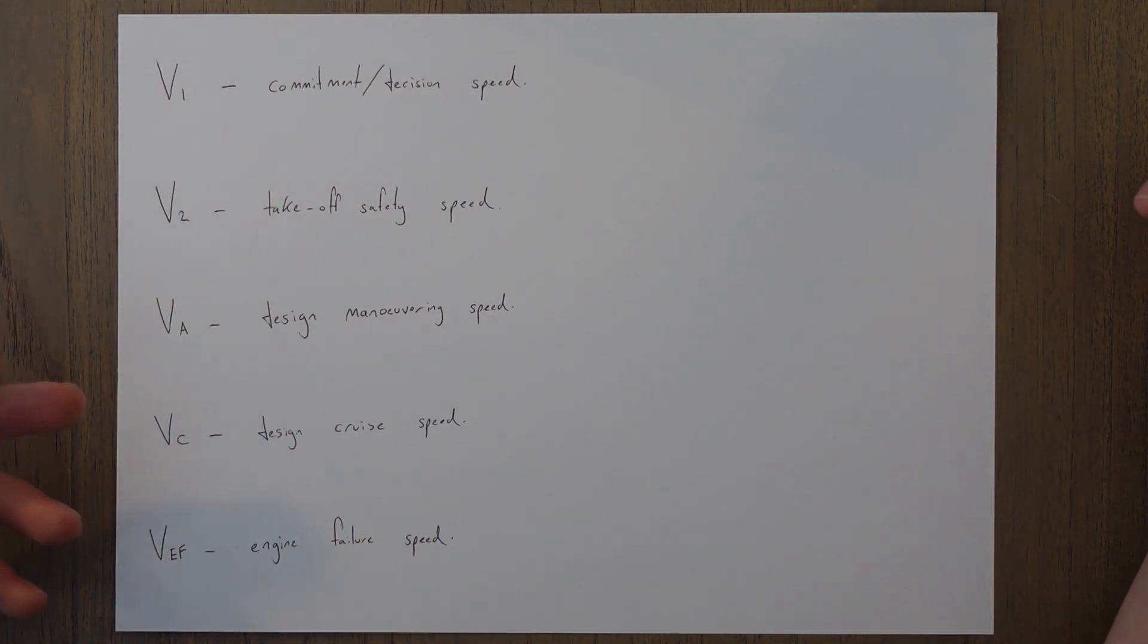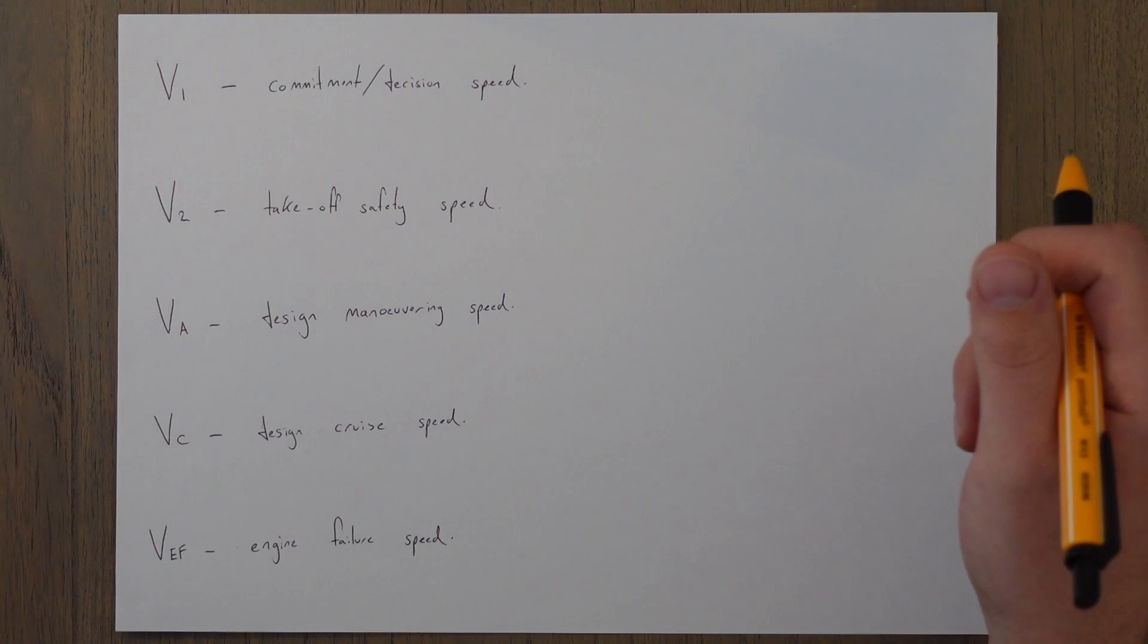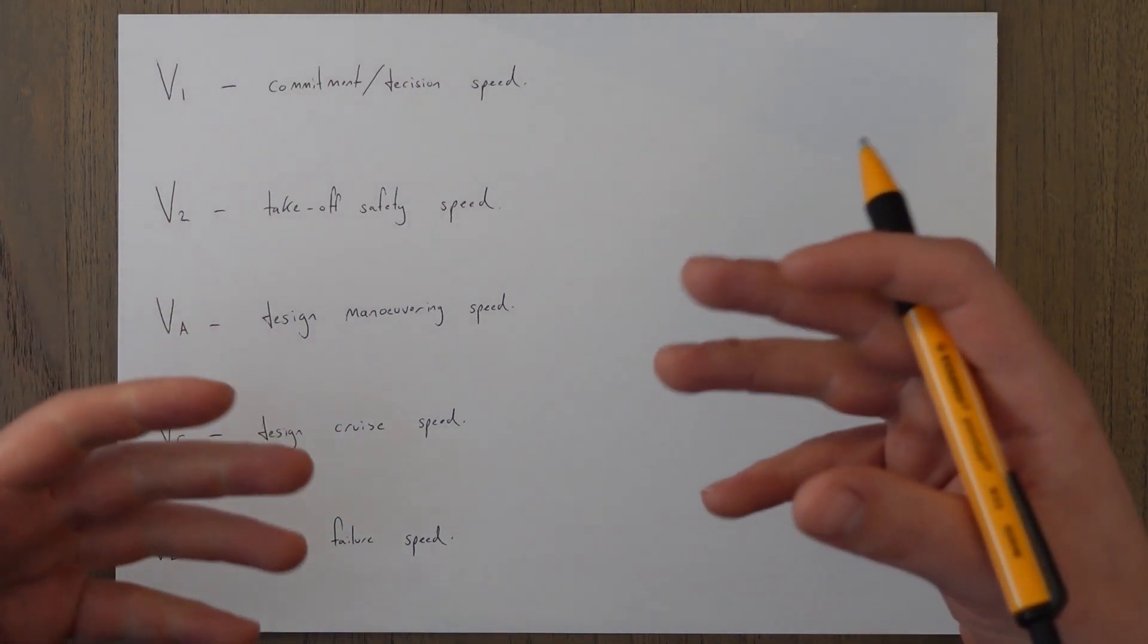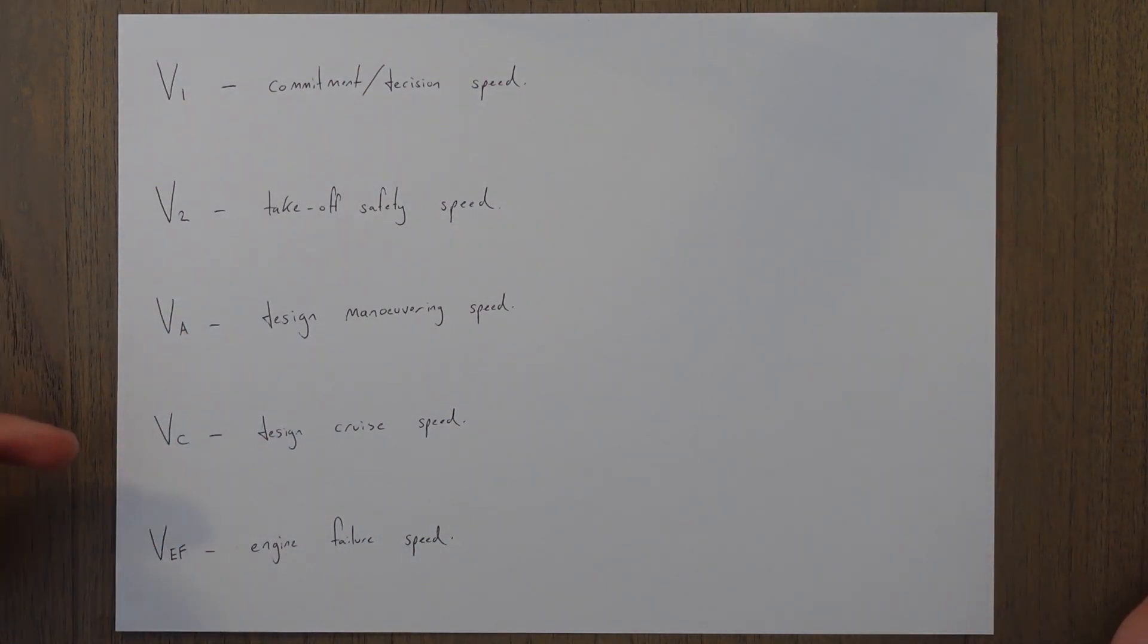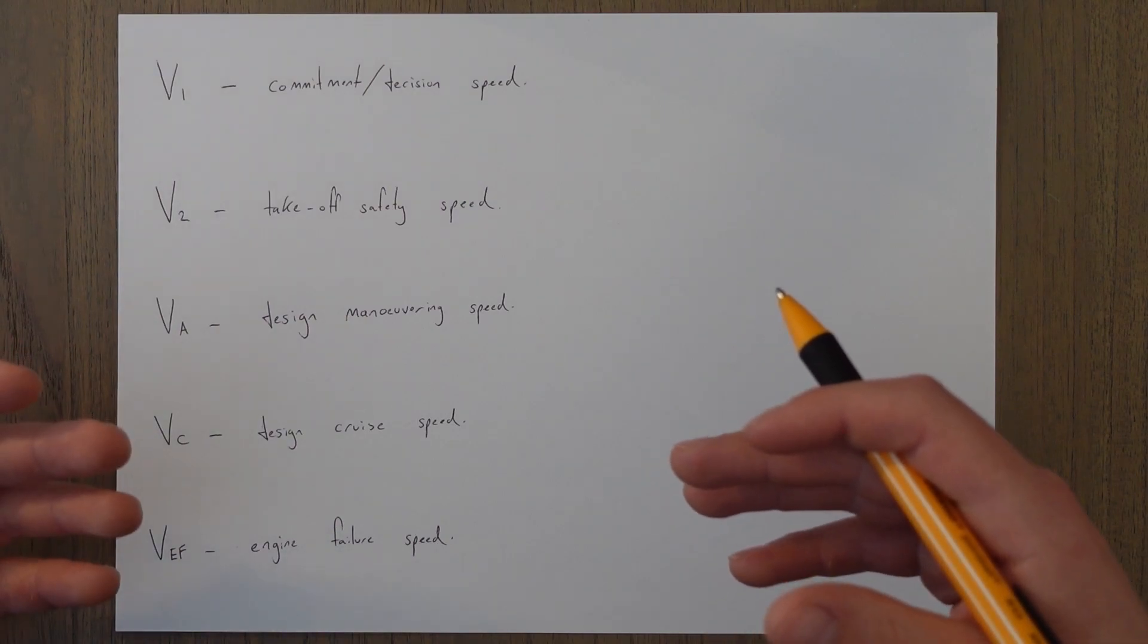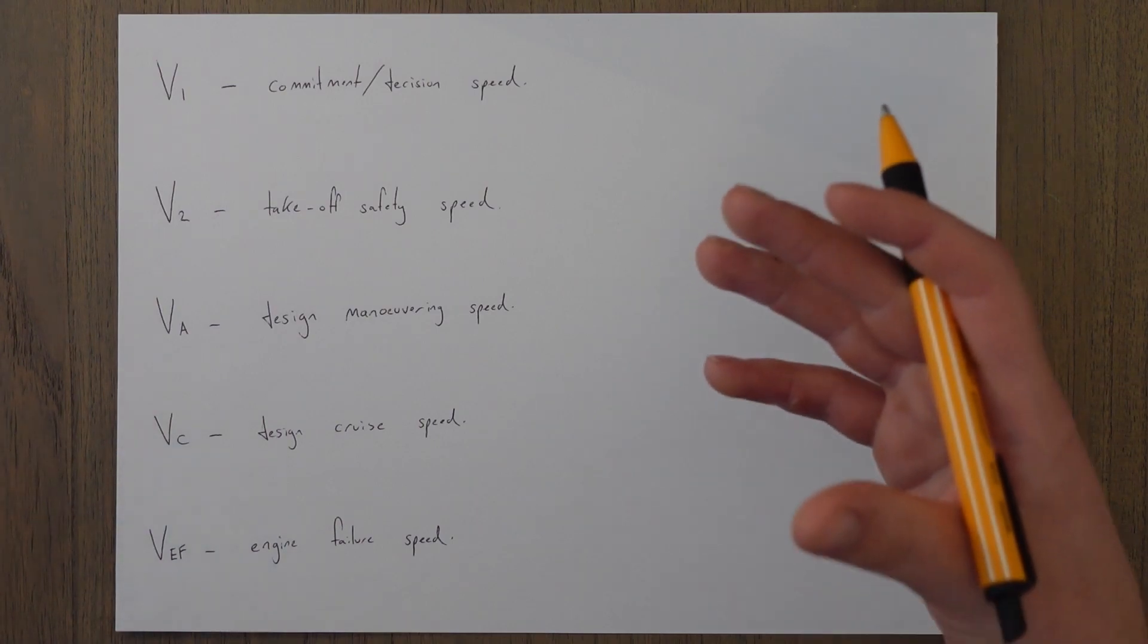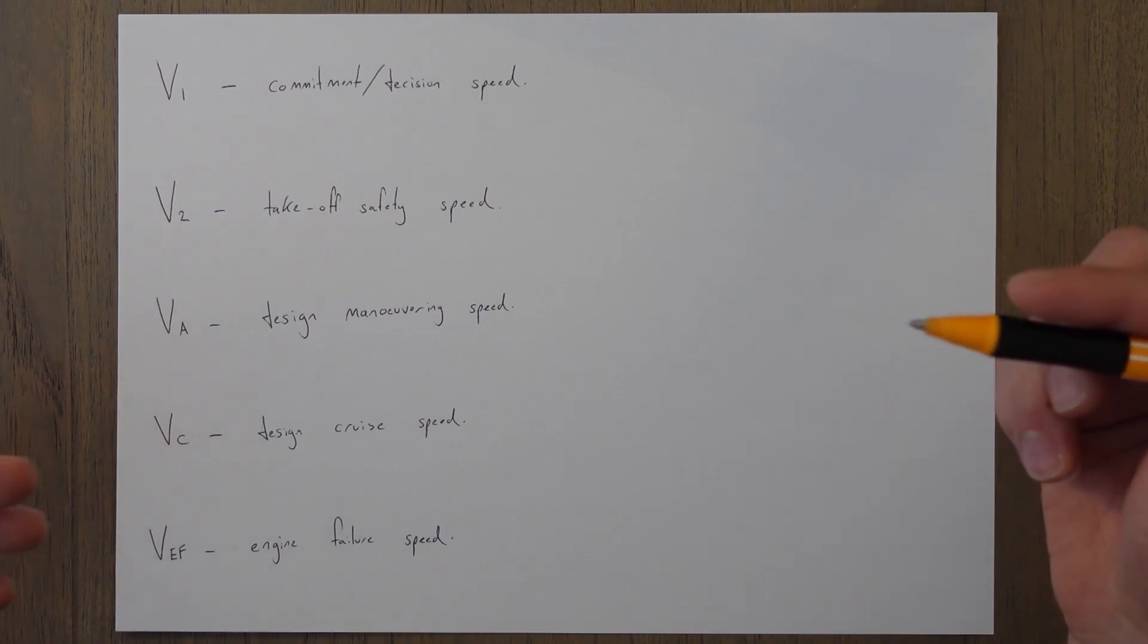VA is the design maneuvering speed, this is the speed above which it is unwise to make full application of control inputs as it may generate a force greater than the aircraft's structural limitations. VC would be the cruise design speed, which is also known as the optimum cruise speed, it's the most efficient speed in terms of distance, speed, and fuel usage, which will be basically the same as the speed for best long-range cruise or VLRC.